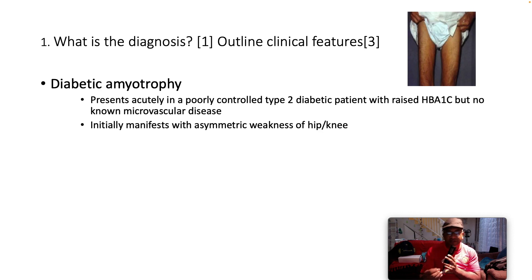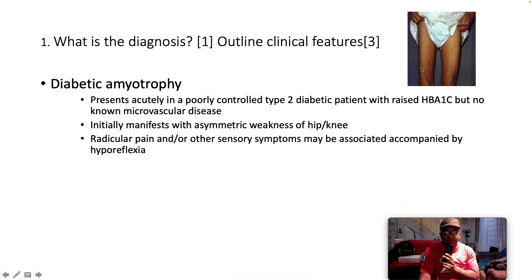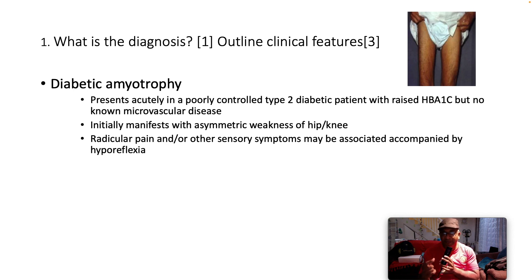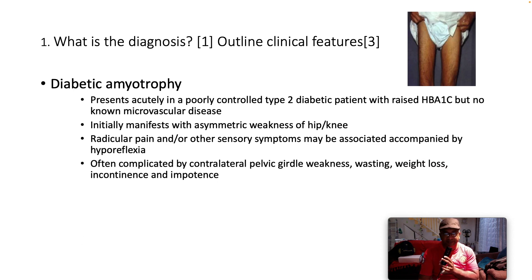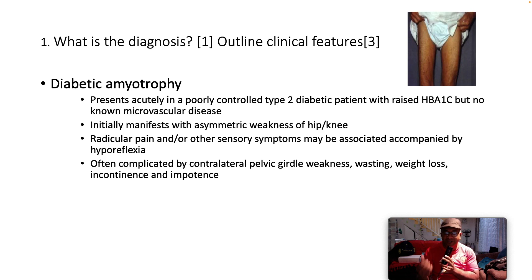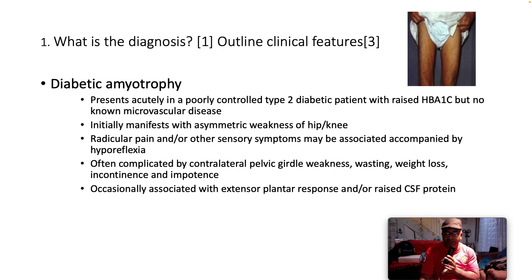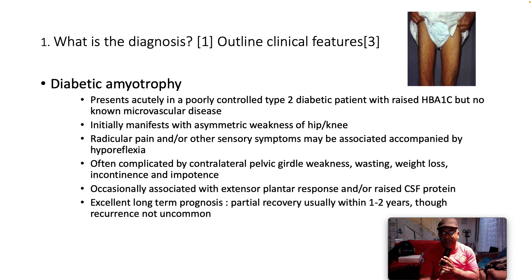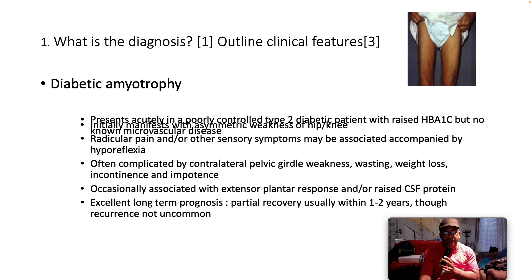It initially manifests with asymmetrical weakness of the hip or knee, as we can see depicted here. What we have is radicular pain, which means pain associated with a specific nerve root, and other sensory symptoms may be accompanied by hyporeflexia. It's often complicated by contralateral pelvic girdle weakness, wasting, weight loss, incontinence, and impotence. Occasionally it's associated with an extensive plantar response and/or raised CSF protein. The long-term prognosis is quite good — there's partial recovery usually within one to two years, though recurrence is not uncommon.